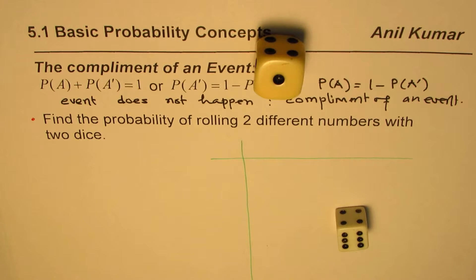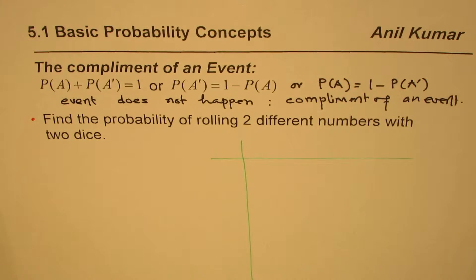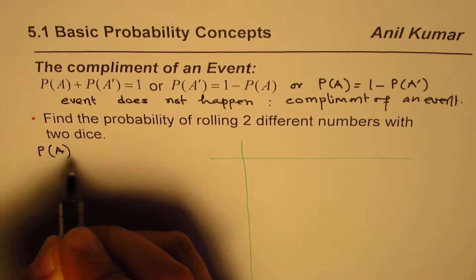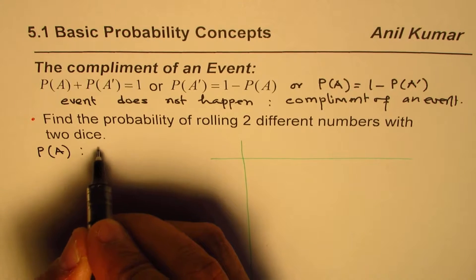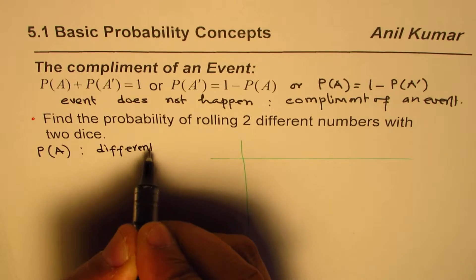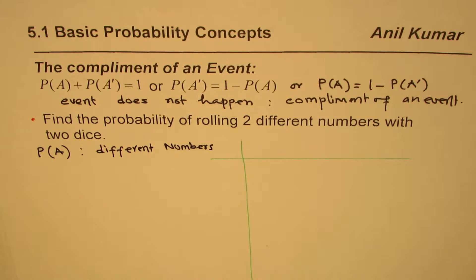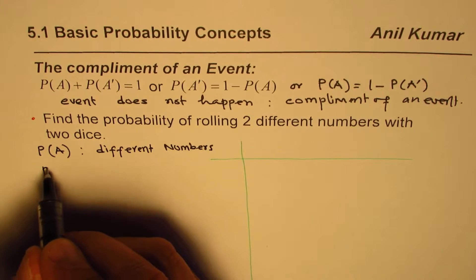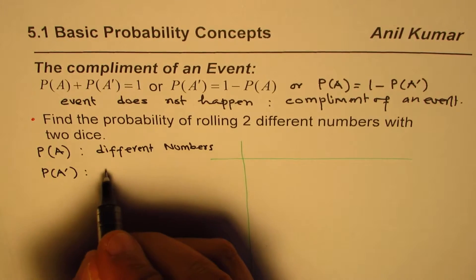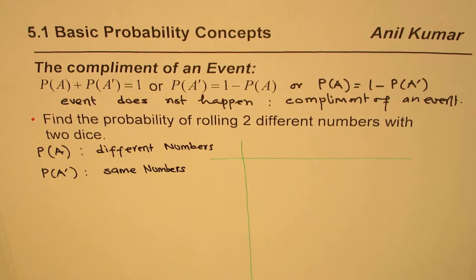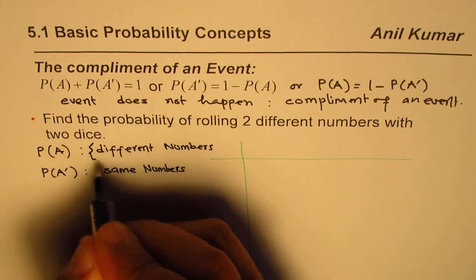There are so many combinations that give two different numbers, but very limited combinations give the same number. So we say event A is getting different numbers, and rather than finding that directly, we try to find the probability of the complementary event — same numbers — since getting same numbers is fewer outcomes, making it faster to calculate.